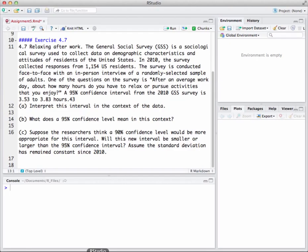The first exercise we're going to do to help us get going with this is exercise 4.7, Relaxing after work. The General Social Survey is a sociological survey used to collect data on demographic characteristics and attitudes of residents of the United States. In 2010, the survey collected responses from 1,154 US residents.